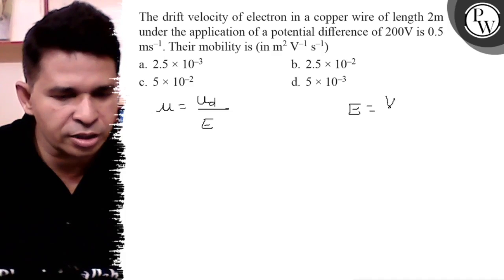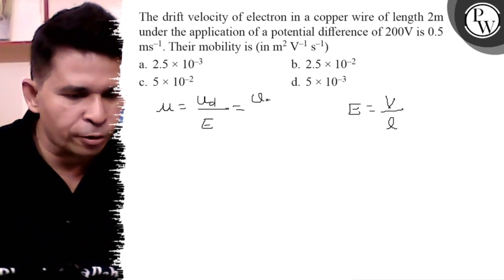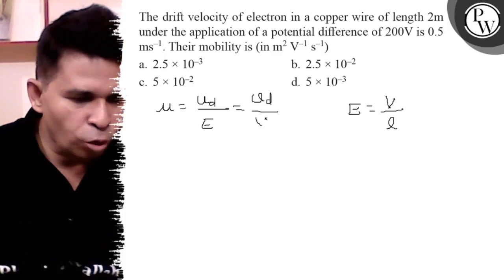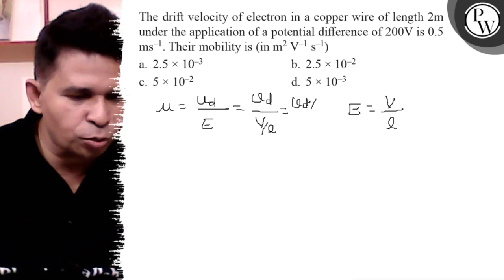So mobility μ = Vd/E = Vd/(V/L) = Vd × L / V, where Vd is drift velocity, L is length, and V is potential difference.